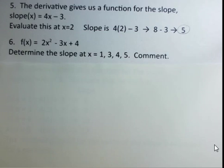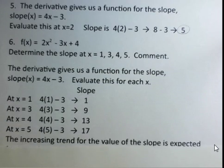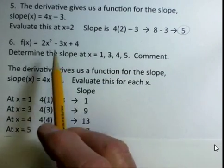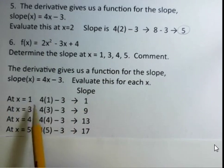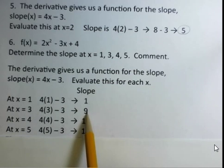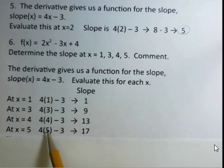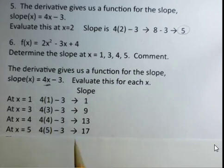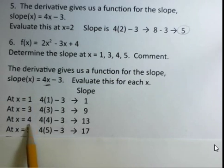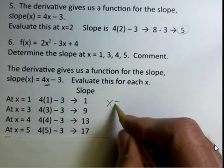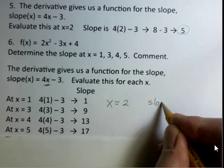Using the slope function 4x minus 3, we can quickly find slopes at multiple x values. When x is 1, the slope is 1. When x is 3, the slope is 9. When x is 4, the slope is 13. When x is 5, the slope is 17. We find these by simply replacing x with the desired values in the slope function — much quicker than using delta y over delta x or drawing tangent lines at each point.